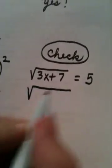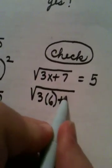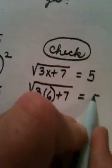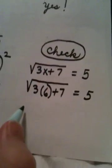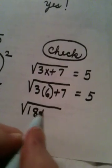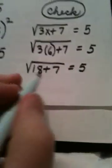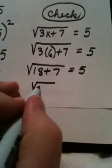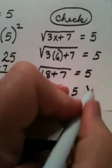This is the square root of 3 times 6 plus 7 is supposed to equal 5. We're not sure, but that's why we're checking. The square root of 18 plus 7 is supposed to equal 5. The square root of 25 is 5. Yes.